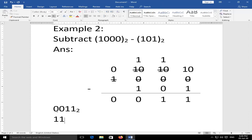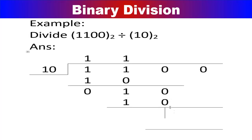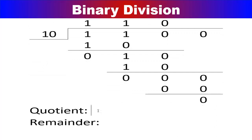Example of binary division: 1100 divided by 10. Perform the division similarly to decimal long division: subtract 10 from 11 to get 1, bring down next digit; subtract 10 from 10 to get 0, bring down; remainder becomes 0. The quotient is 110 (base 2) and the remainder is 0.